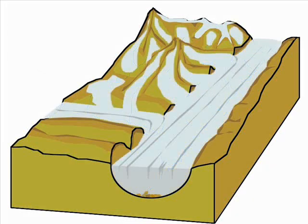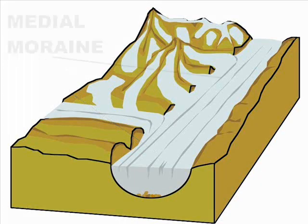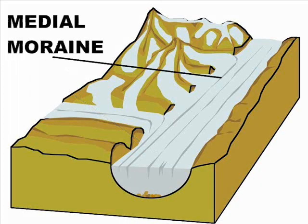Main Glacier. This is the largest flowing area of the glacier. Medial Moraine. When a small tributary merges with the main trunk glacier, the debris on the lateral moraines becomes lines of material carried along in the main glacier.